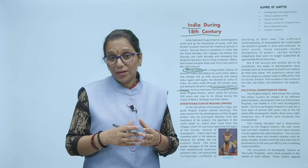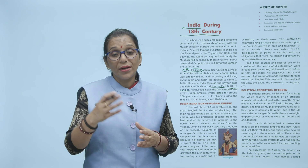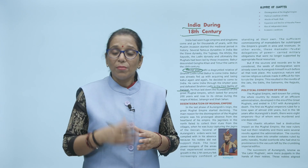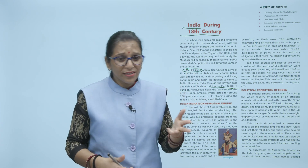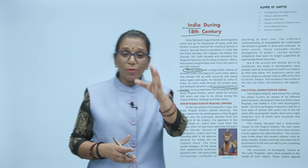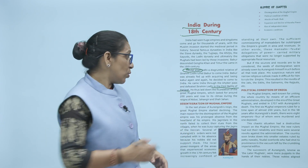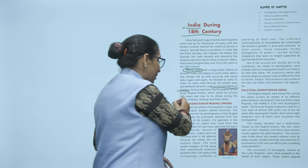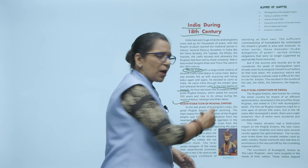So yeh tha ke Mughal Empire jo hai, Babur ne First Battle of Panipat ke baad established kiya. Uske baad yeh jo Mughal dynasty thi, it ruled for around 200 years — Babur, then Humayun, after that Akbar, Akbar ke baad Jahangir, then Shah Jahan, and then Aurangzeb. So disintegration of the Mughal Empire — Mughal Empire ka end kaise hua.